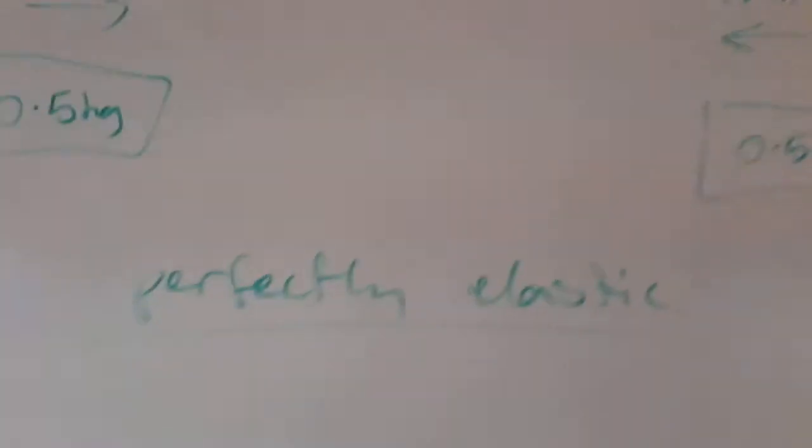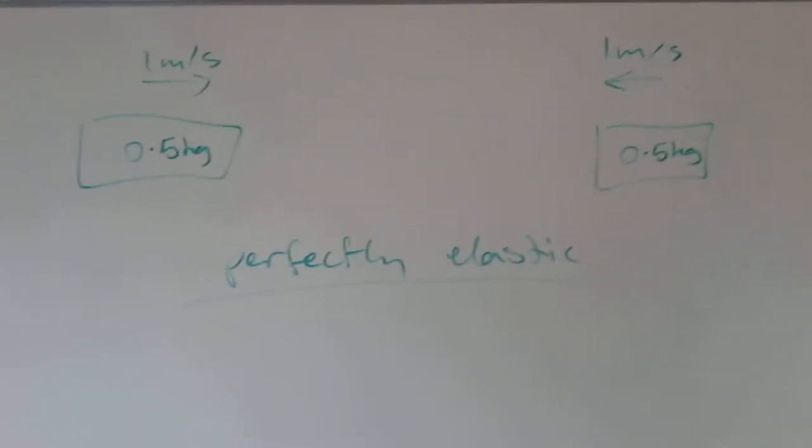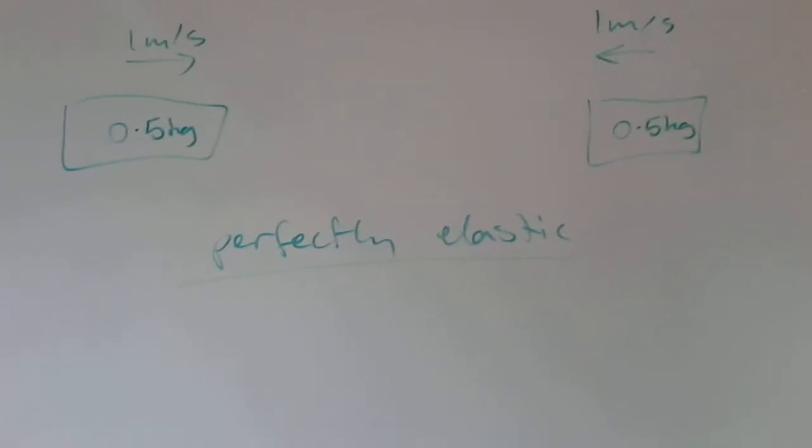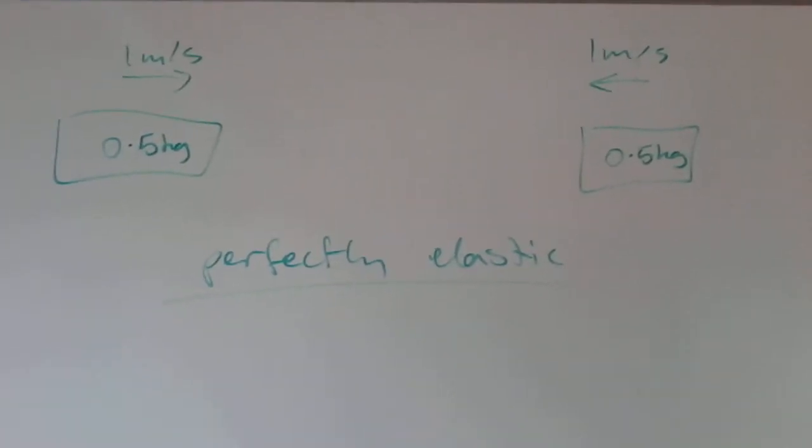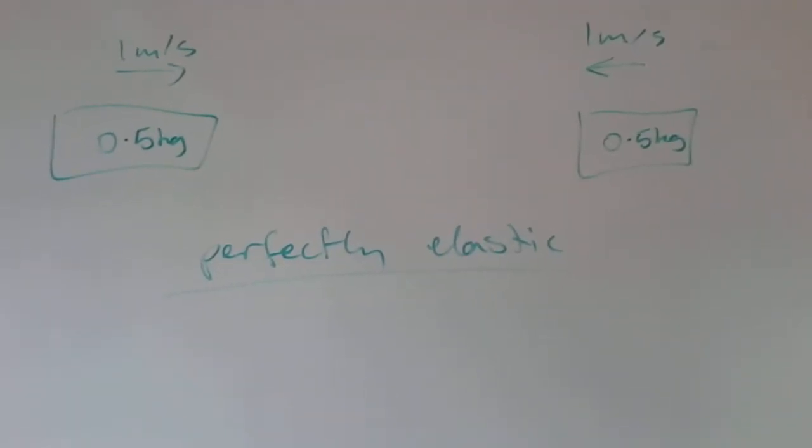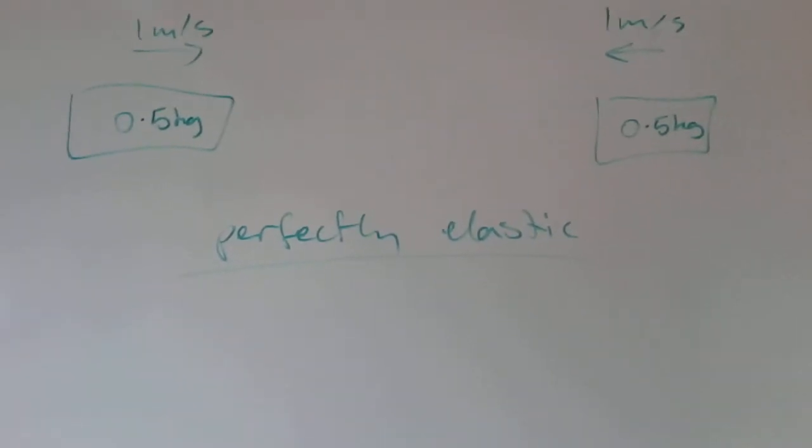So here's the situation: we've got two trolleys moving towards each other and the collision's perfectly elastic. I want you to think about how much energy is stored in that spring when the spring is at its greatest compression. So when the spring is most compressed, how much energy is stored in it? Take five minutes, try and work it out, and then we'll come back to it and see what you think.